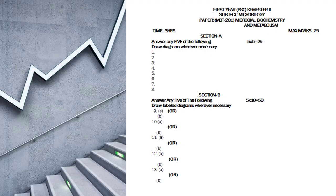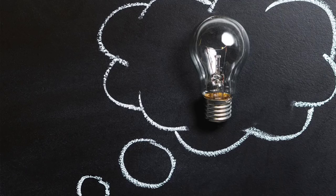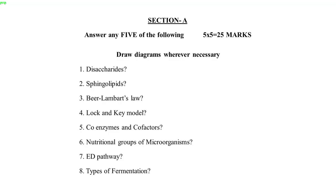The second section is B. This section contains 10 questions but you have to answer only 5 questions. One-to-one choice is there — from each unit two questions are there but you have to answer only one question. This is about the paper pattern. Now let's see the questions from different units, Section A and Section B.